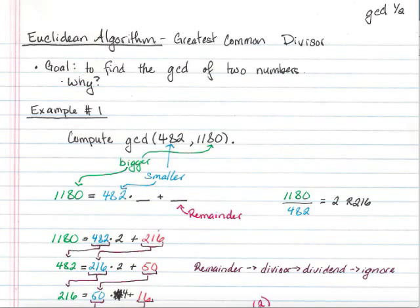In this video, I'm going to go over how you use the Euclidean algorithm to find the greatest common divisor, the GCD. The greatest common divisor, as I'm sure you can figure out, is the largest number, the largest divisor that will go into both of two numbers.